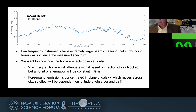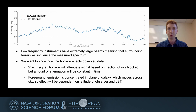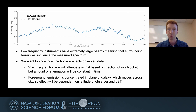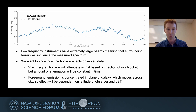Rather than talk about the theoretical side, as Joshua focused on, I'm going to talk more about modeling the actual observations that we're going to get from the lunar far side. I want to begin by noting that basically all of these low frequency instruments that we use to do global 21 centimeter cosmology have extremely large beams.